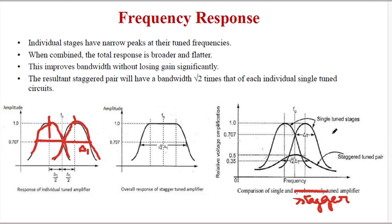These are all the individual stages and they are overlapped. The stagger tuned amplifier response has less amplitude. The voltage gain of the stagger tuned pair is much less compared to the voltage gain of the single tuned stages — remember this when comparing the graphs.